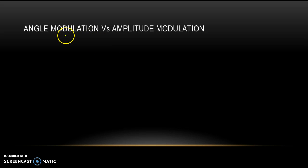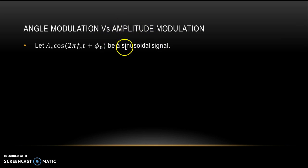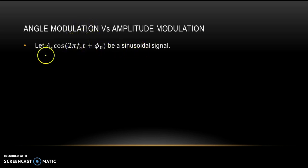The first question is: angle modulation versus amplitude modulation. We will try to understand mathematically how these two things are different from each other. Let us suppose AC·cos(2π·fc·t + φ₀) is a sinusoidal signal. This is our standard signal that we generally use. So the signal s(t) is equal to AC·cos(2π·fc·t + φ₀).